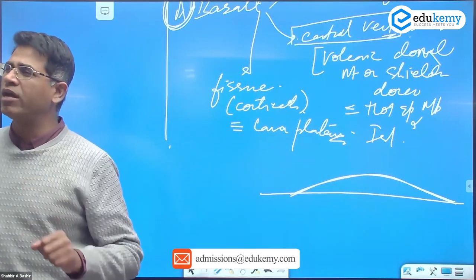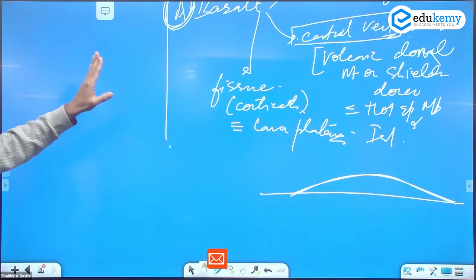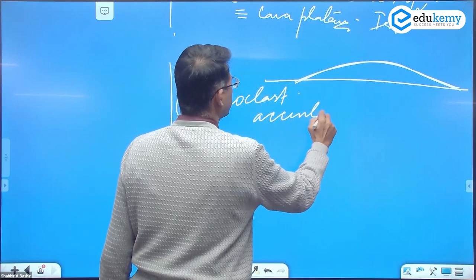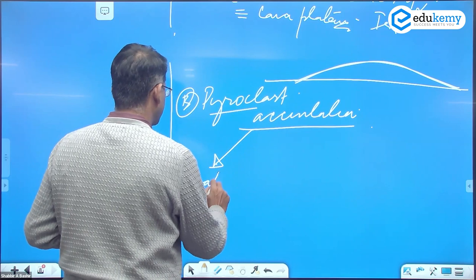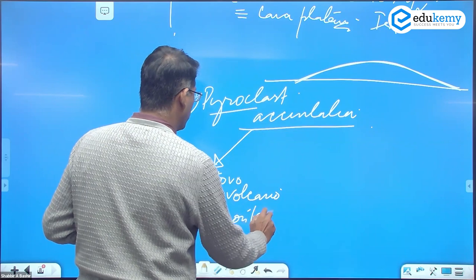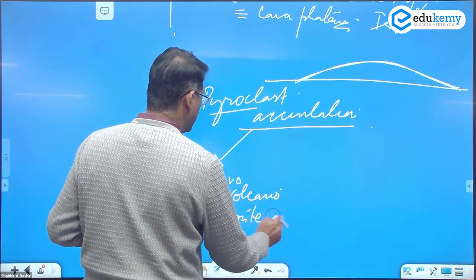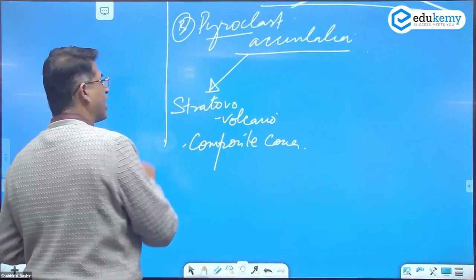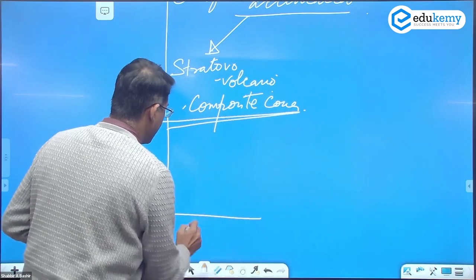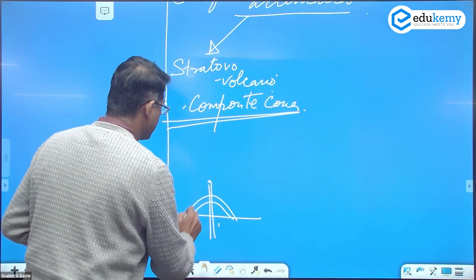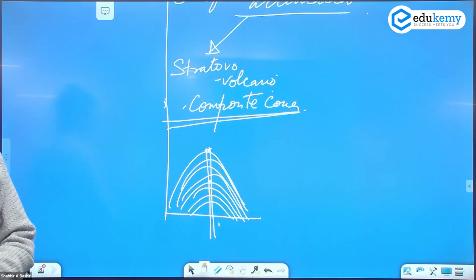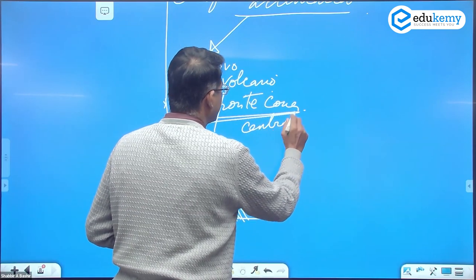So that is the basalt accumulations. Now pyroclast accumulations mein, the most common one is stratovolcano, also called as composite cones. Composite cones. So these type of features, they will have central vent and there are layers of pyroclast. Stratovolcanoes, composite cones. They are of a central vent type.